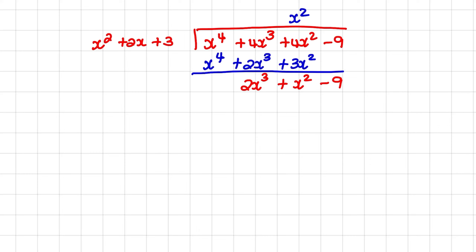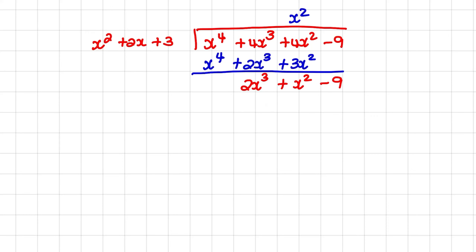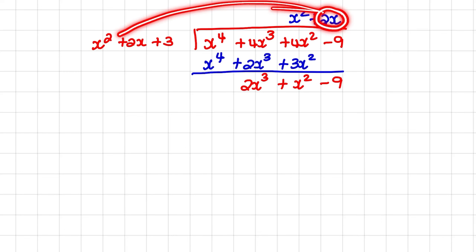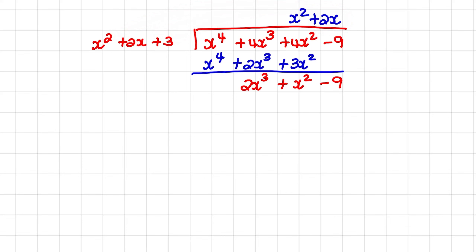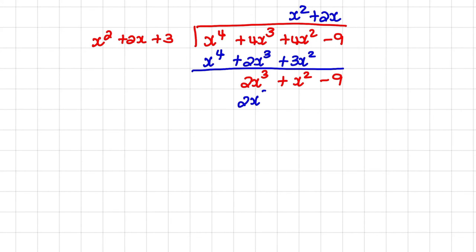Now I repeat that process again. So I have 2x cubed and I divide it by my first term of x squared, and that result is simply plus 2x. Now we take the second term of 2x and multiply it with every term in our factor. So 2x times x squared is 2x cubed. 2x times 2x is simply 4x squared. Then we have 2x times 3, which is plus 6x.